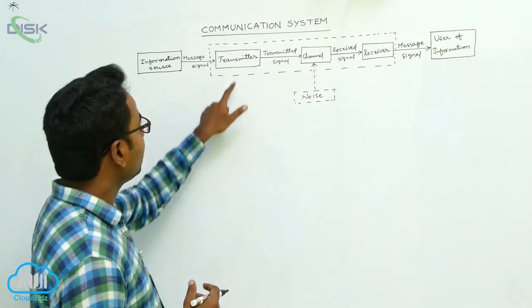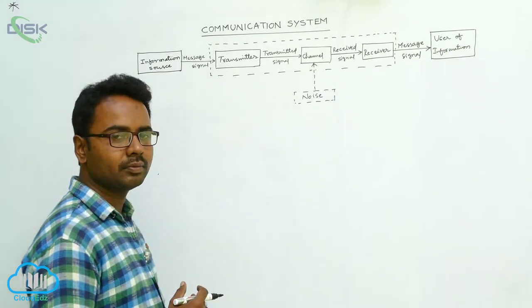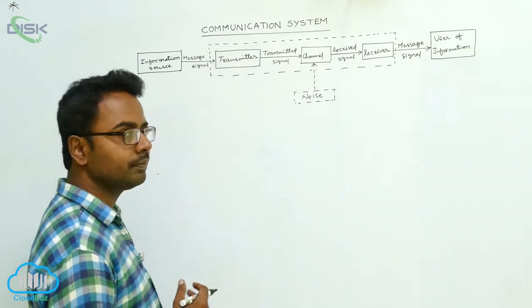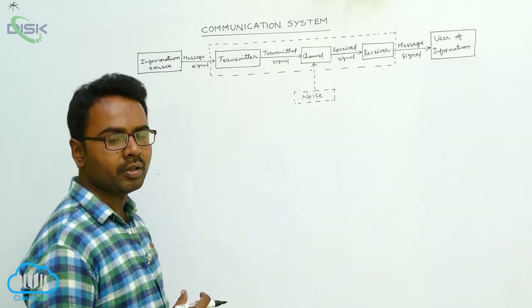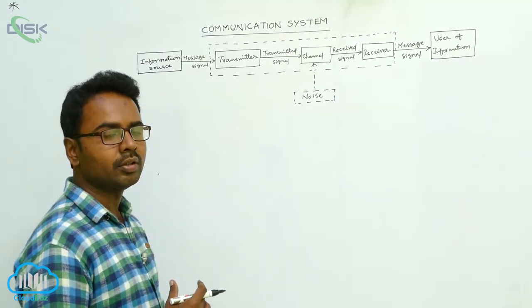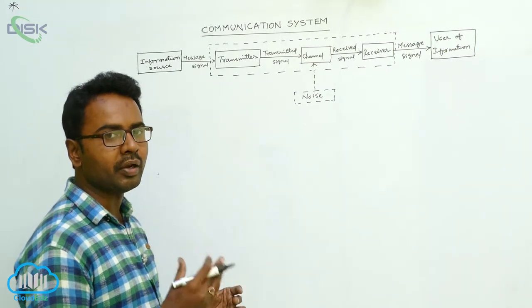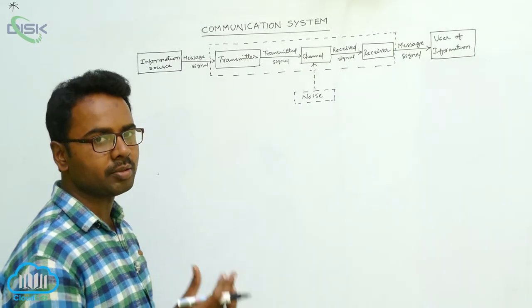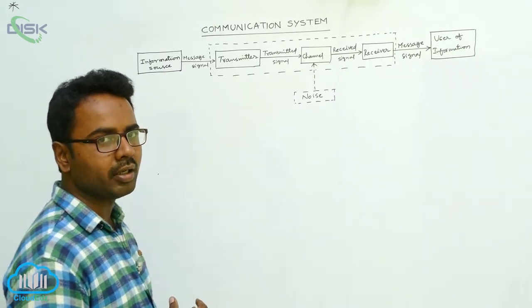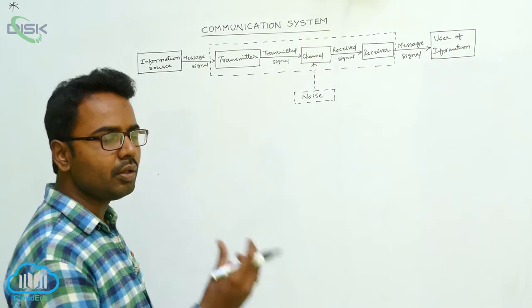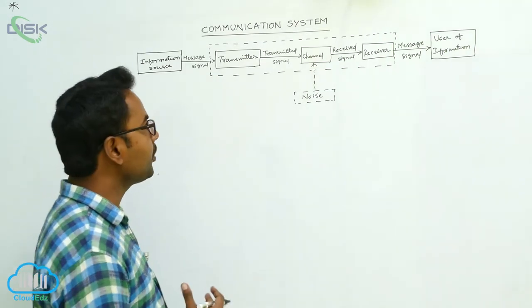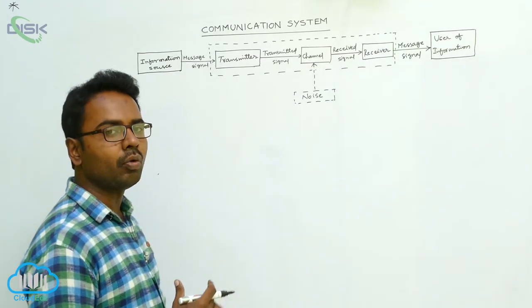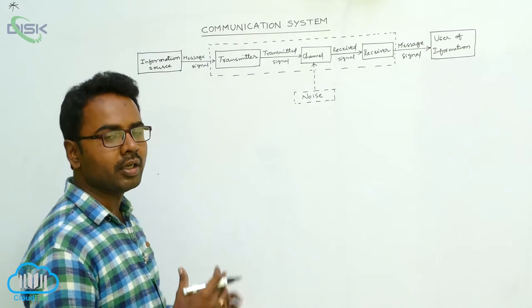Let's understand what a transmitter is. The transmitter is the device that receives the information from the source of information. For example, consider the transmission of radio programs. In a radio station, someone is singing a song. The person sings into a microphone, and that information — the message signals — is given to the transmitter.